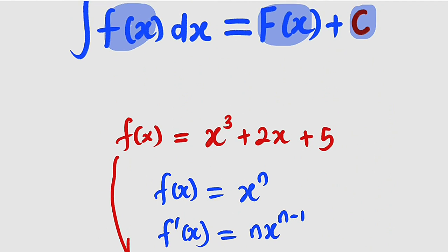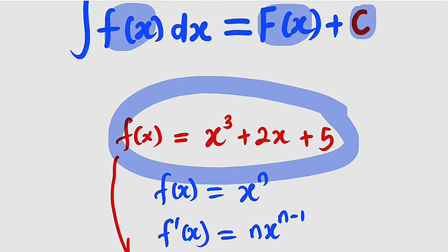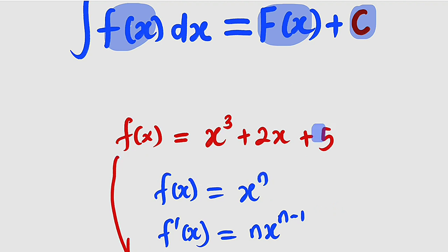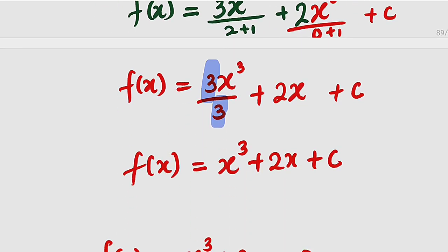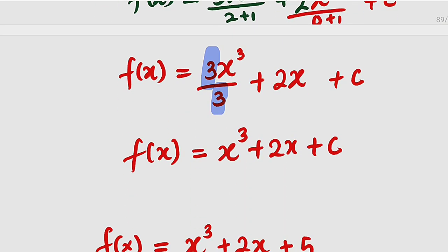So what I would like to tell you is that whenever you have a function that contains a constant, the moment you differentiate it, the constant becomes 0. And if you integrate the derivative, you obtain the original function back — but you will never get that constant. This is why we replace it with c, where c is a real number. Thank you for watching. Do share with your learning colleagues and don't forget to subscribe to my YouTube channel for more exciting videos. Bye-bye.